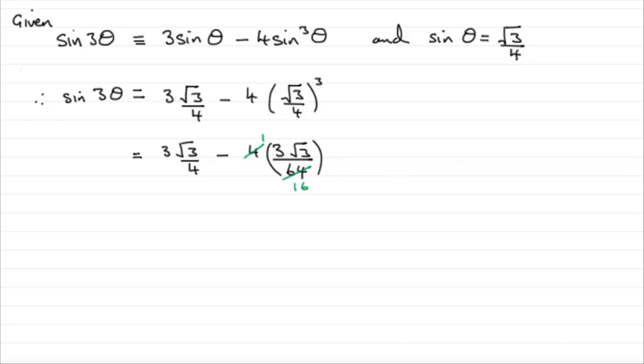So what you've got then is essentially the first term 3 root 3 over 4 minus 3 root 3 over 16. And if you change this into 16ths by multiplying top and bottom here by 4, you're going to get 12 root 3 over 16 minus another 3 root 3 over 16.